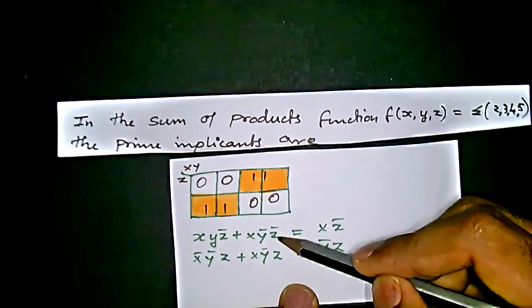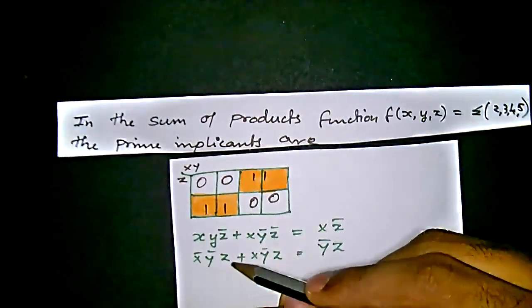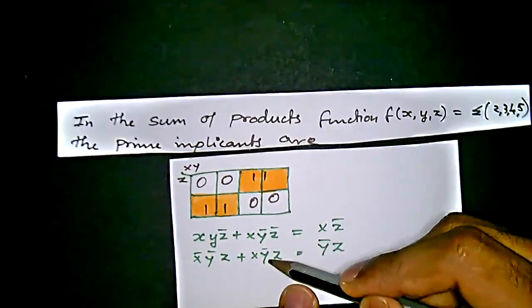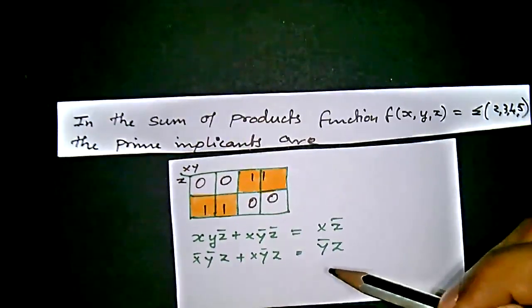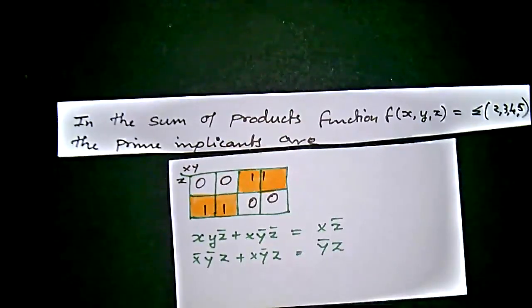If they ask for just implicant values, we should write xyz̄ and xȳz, x̄ȳz, and finally xȳz. That is the value of implicants. Thank you, your comments are welcome.